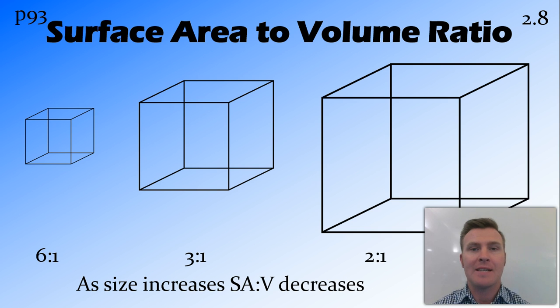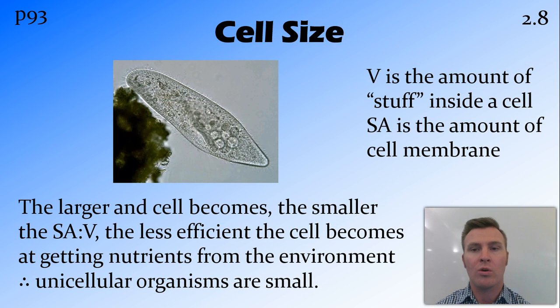So our 3 cubes: we had 6 to 1 for the 1 by 1, for the 2 by 2 by 2, 3 to 1, and for the 3 by 3 by 3, 2 to 1. So you can see that as the size of the cube increases, the surface area to volume ratio decreases. Now that we've worked out what surface area to volume ratio is and how to calculate it, what's the point?